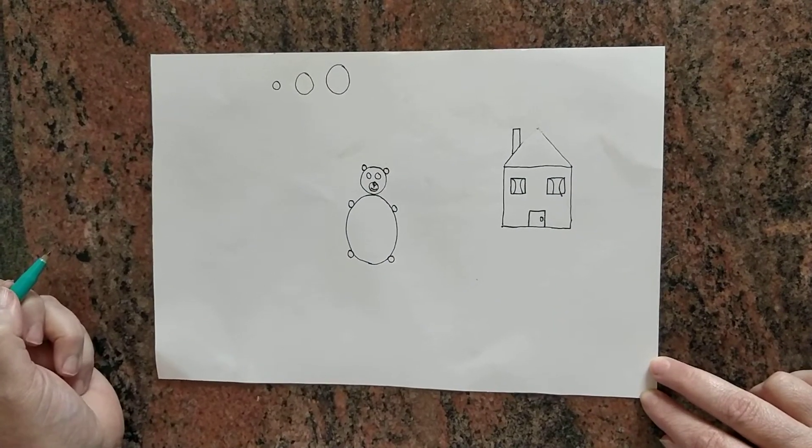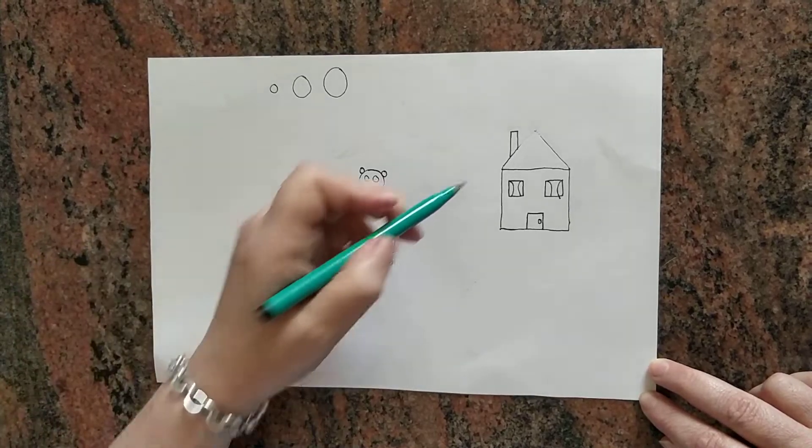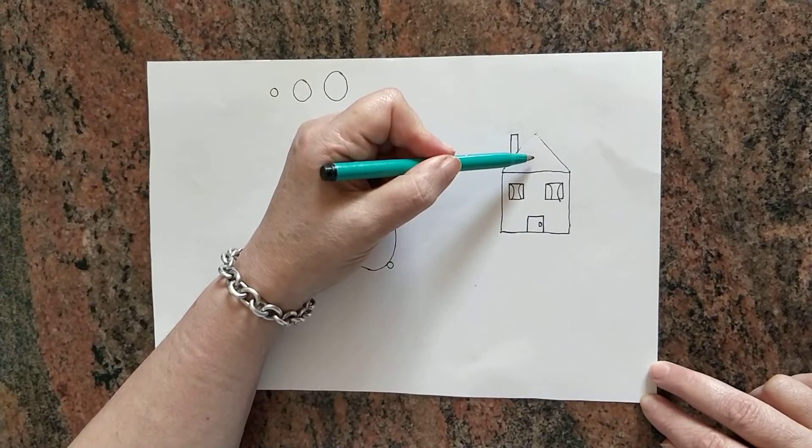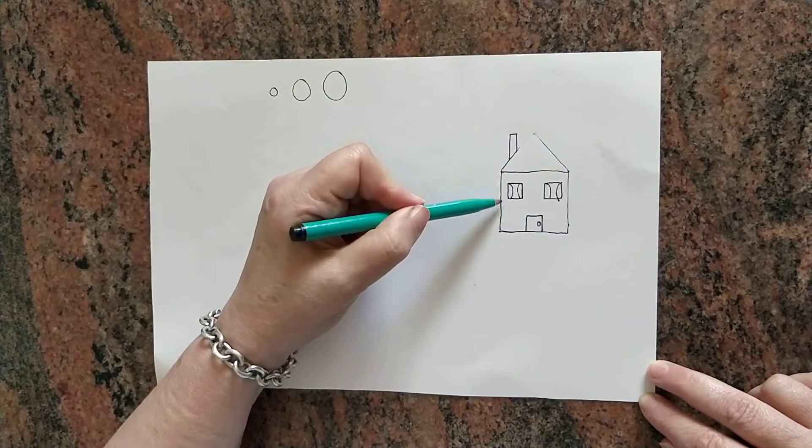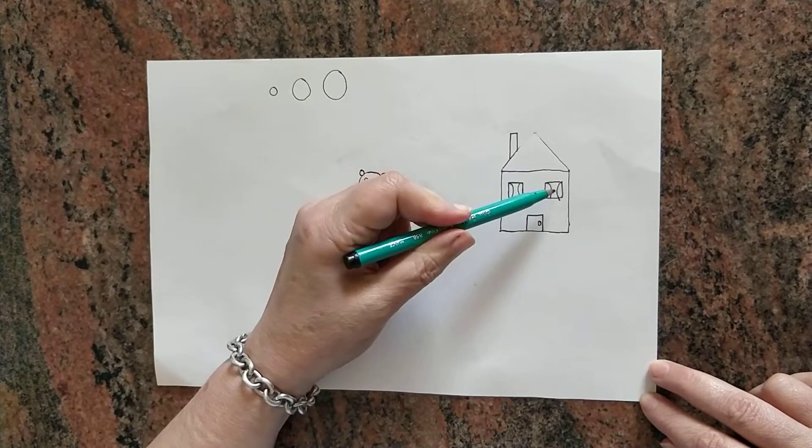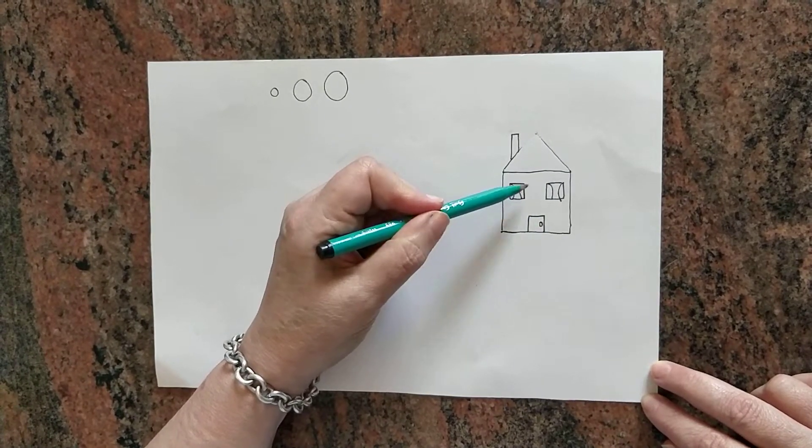This is the house. First, the triangle, a square, small squares, one, two, three, and the chimney.